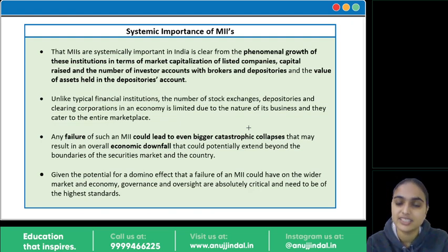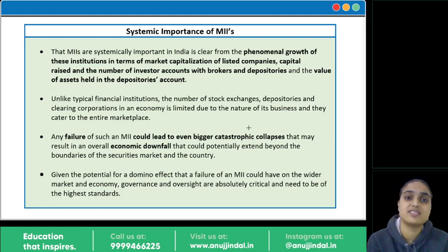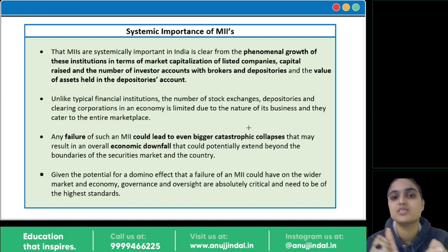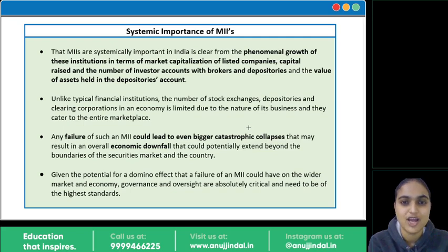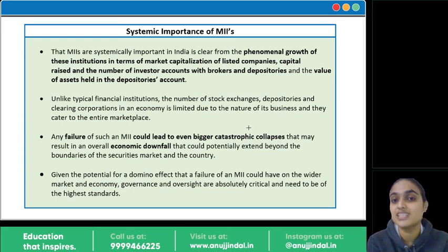If something goes wrong, if some problem arises, all investors and companies are going to be impacted — that's why these are systemically important institutions. For example, with NSE glitches: recently there was a glitch on Monday, and in the past 5 years there have been glitches causing 3-4 hours of trading downtime. When these glitches happen, a lot of money is lost by investors and companies. There is major loss even for a few seconds of problems.